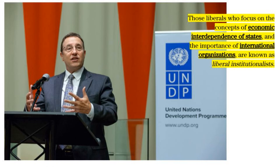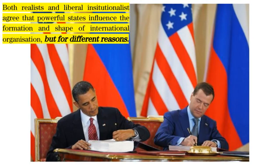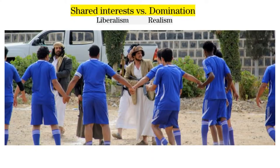Those liberals who focus on the concepts of economic interdependence of states and the importance of international organizations are often referred to as liberal institutionalism. Liberal institutionalism contrasts in several critical areas with realism. Both agree that powerful states influence the formation and shape of international institutions, but for different reasons. According to liberals, states create institutions to maximize shared interests. For realists, however, it is to realize and maintain domination.